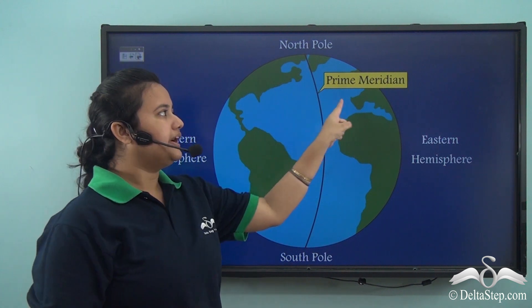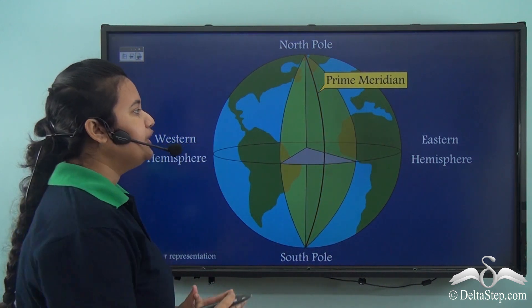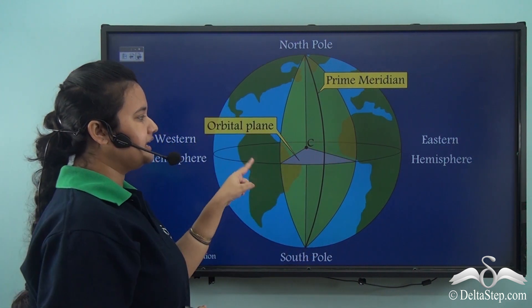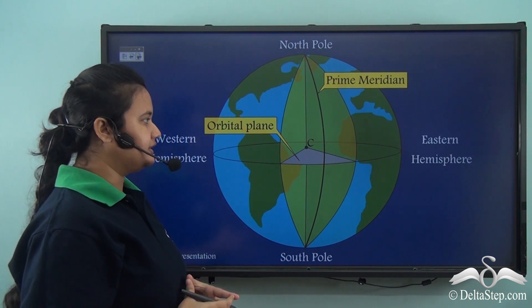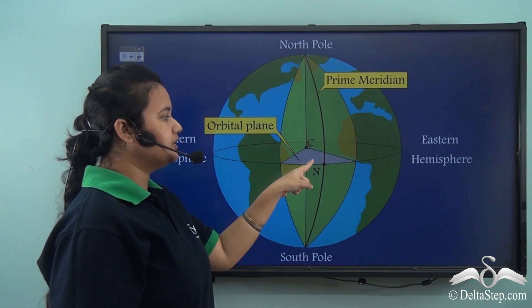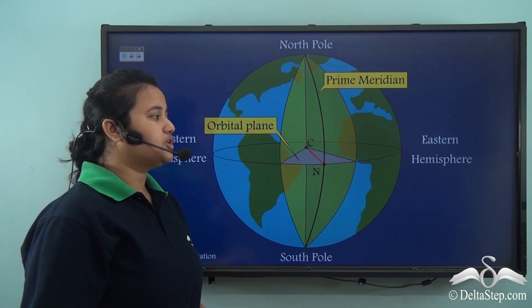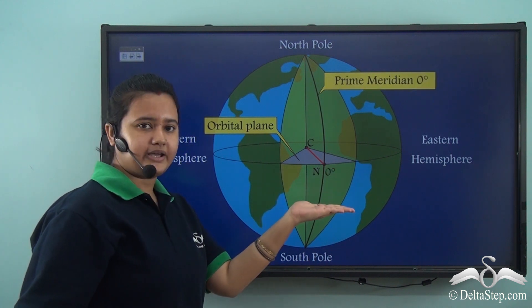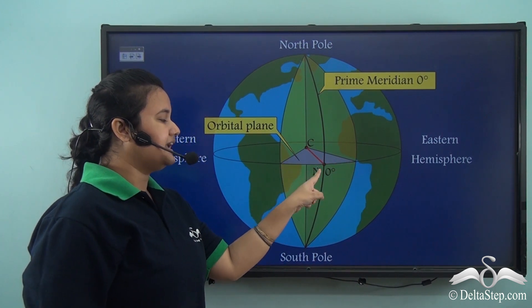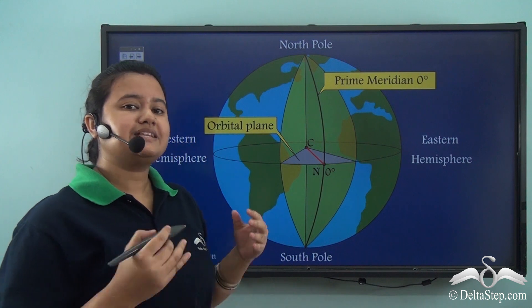We know that the Prime Meridian divides the Earth into Eastern and Western Hemisphere. If you open the globe along this Prime Meridian, you will find the orbital plane and C which is the centre of the Earth. Take a point N on the Prime Meridian where it coincides with the orbital plane. Draw a line from C to N. This CN lies on the orbital plane. We can see that the line makes an angle of 0 degree with the orbital plane. Hence, 0 degree longitude is also known as Prime Meridian.